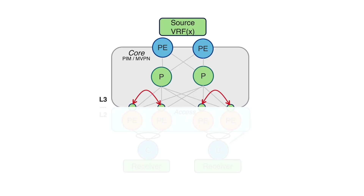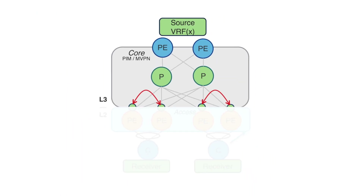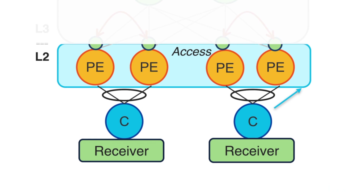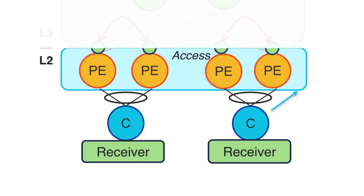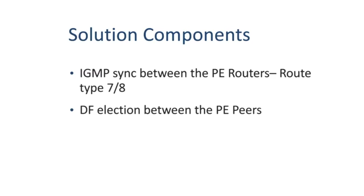Multi-homing is in high demand on provider edge networks because it offers a plethora of services — it enables load balancing by dividing data across multiple interfaces, provides better redundancy, and supports disaster recovery. Consider the following example: we have the IP core network running PIM on the provider, with the L2 access network and receivers on the customer site. To successfully forward multicast traffic, such as an IP TV service, over a resilient infrastructure with EVPN multi-homing, we need two components: IGMP sync between the PE routers using route type 7 and 8, and DF election between the PE peers.